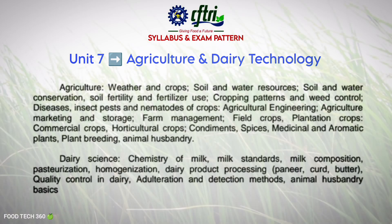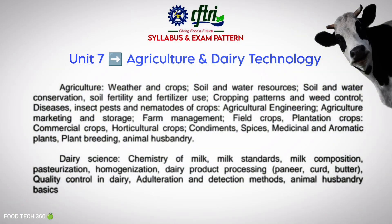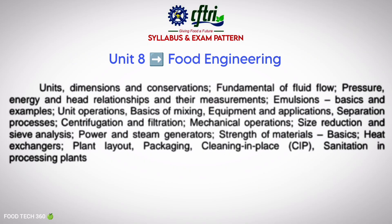Unit 7 is Agriculture and Dairy Technology. From this unit you should prepare for questions on crops, soil, pest, and farm management. For dairy technology, know about milk composition, pasteurization, curd, butter, and adulteration detection.